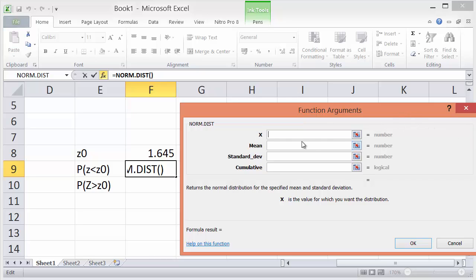Then there are a number of inputs you need. X, that is the Z value you're looking for. Then you need to specify the mean and standard deviation of your distribution, 0 and 1.